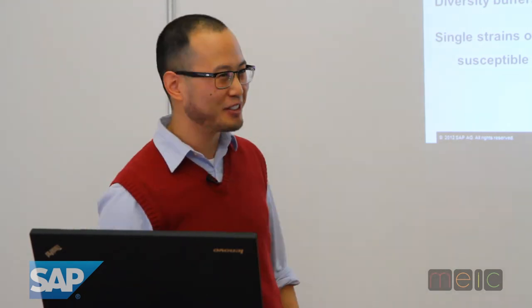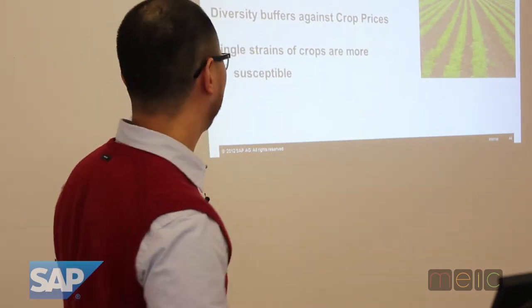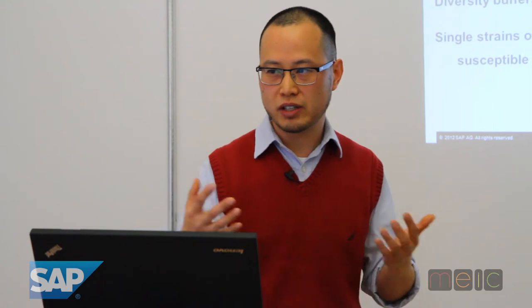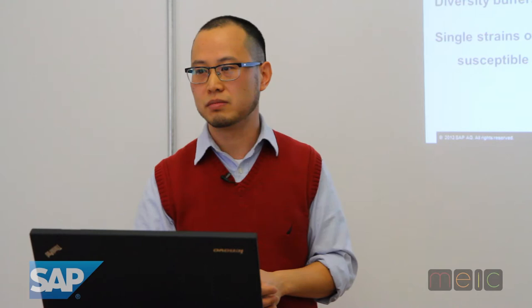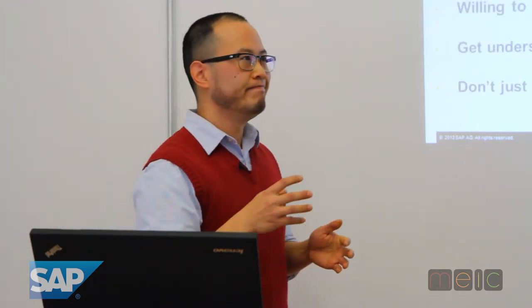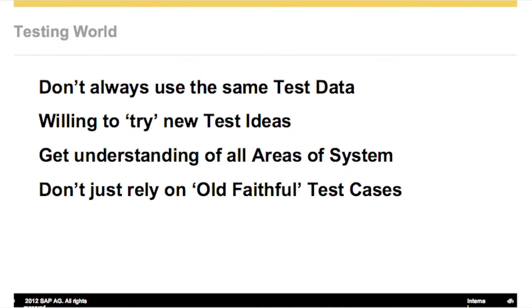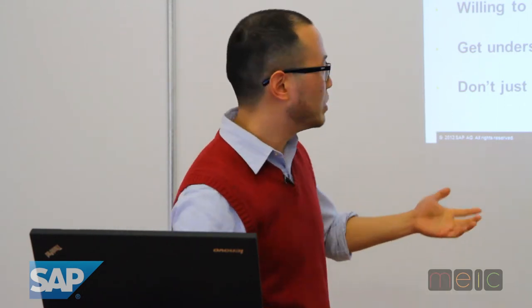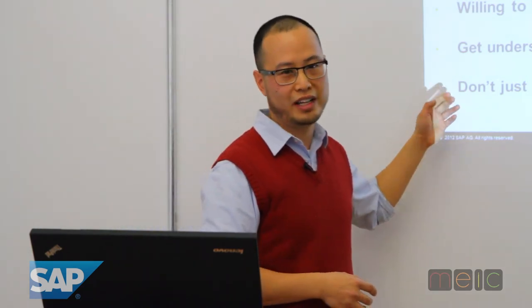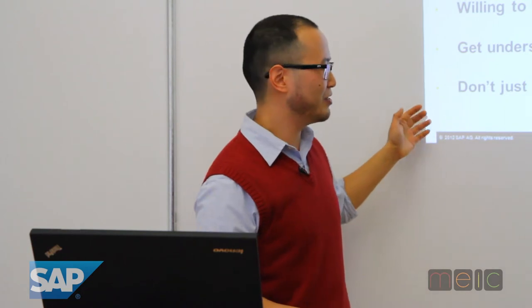Diversity is what your financial advisor will tell you is good, and in farming it's quite good too. A single strain of crops is far more susceptible — if you have a particular strain of apples, you may get wiped out. In the testing world, the same idea applies: don't always use the same test data. Your test data may be very good, but you're testing the same thing over and over. You're only as good as your data. Be willing to try new ideas, get an understanding of all areas of the system, and don't just rely on old faithful tests — because testers usually have favorites, and coders on the same team get very good at anticipating those specific tests.